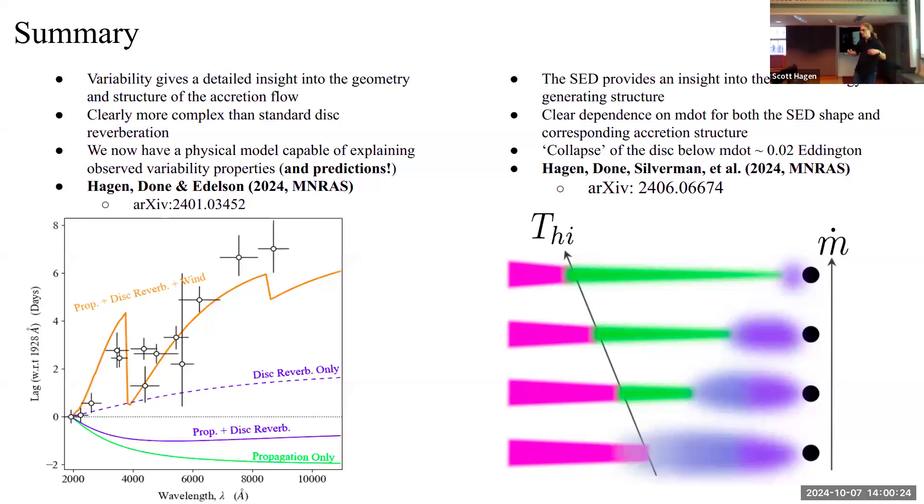And so, in summary, what we have, is the SED giving us an overview of the energy-dominating structure, and constraining the accretion states, and then the variability, getting us to zoom in, and telling us about the detailed structure going on in these systems. And they both come with a whole slew of predictions, which I've not had time to go through.